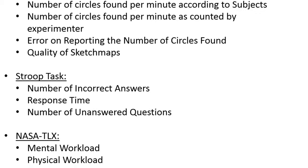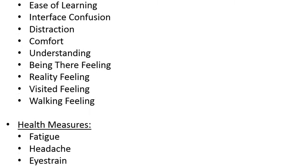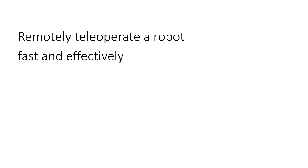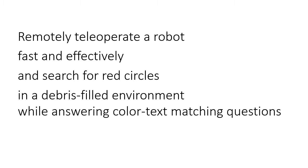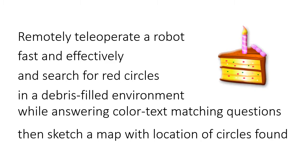Because of the highly perceptual nature of the study, subjects were screened for claustrophobia, colorblindness, hearing or olfactory problems, and allergy to any smells or rosemary. Subjects were also tested for spatial aptitude at the end of the experiment. The task was relatively simple: subjects had to remotely teleoperate a robot as fast as possible without colliding, find as many red circles as possible in a debris-filled environment, while simultaneously answering simple text color-matching questions, and at the end sketch a map of the location with the circles found.